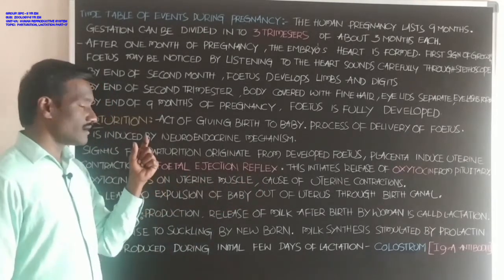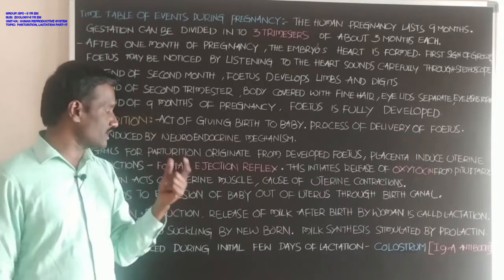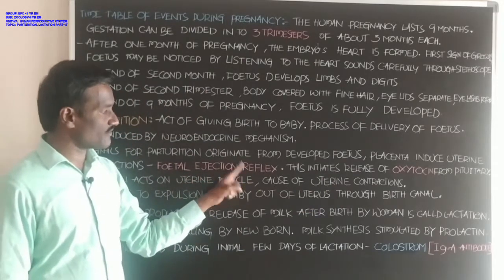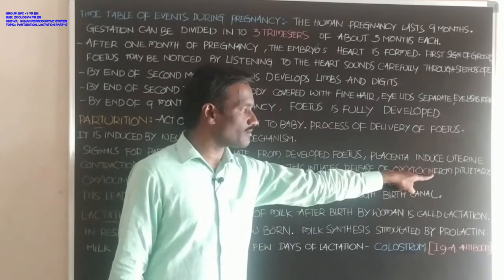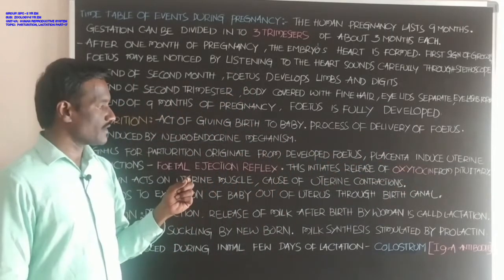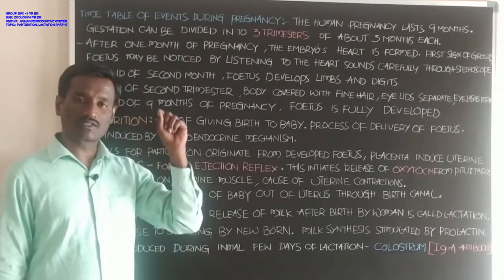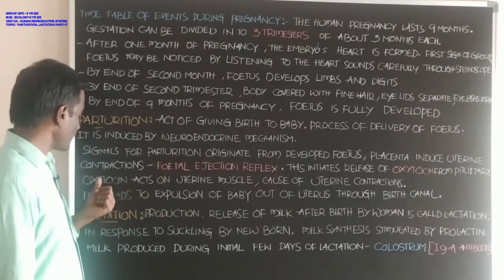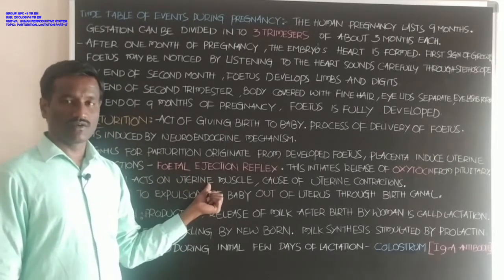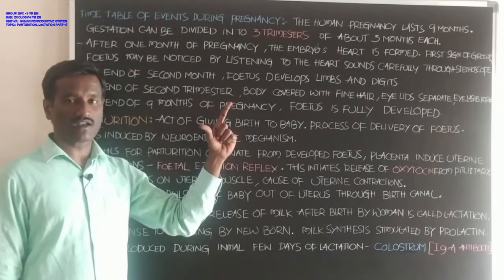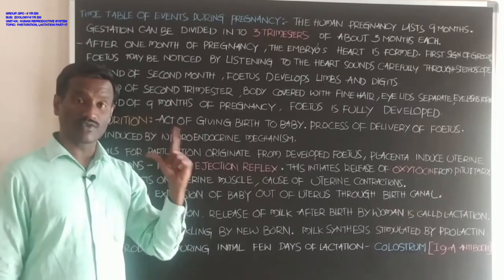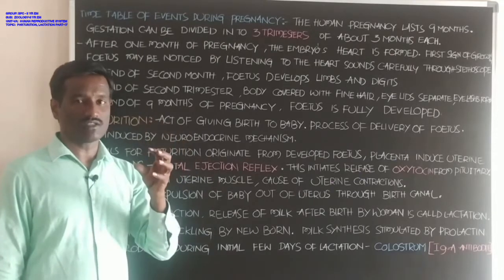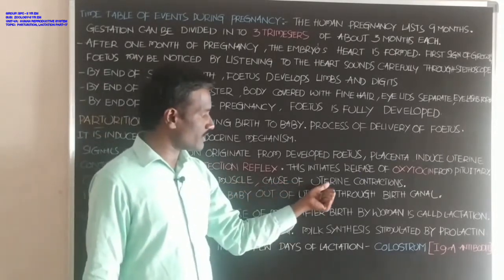Parturition is first signaled with the fetal ejection reflex. This initiates the fetal ejection reflex, which initiates release of oxytocin from the anterior part of the pituitary gland. Oxytocin acts on the uterine muscles — this hormone released from the anterior pituitary acts on the muscles of the uterus and causes contractions of the muscles present within the uterus.